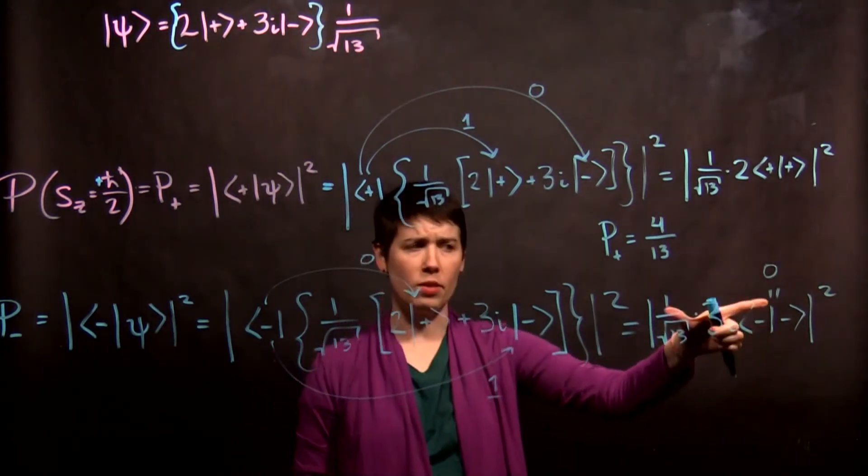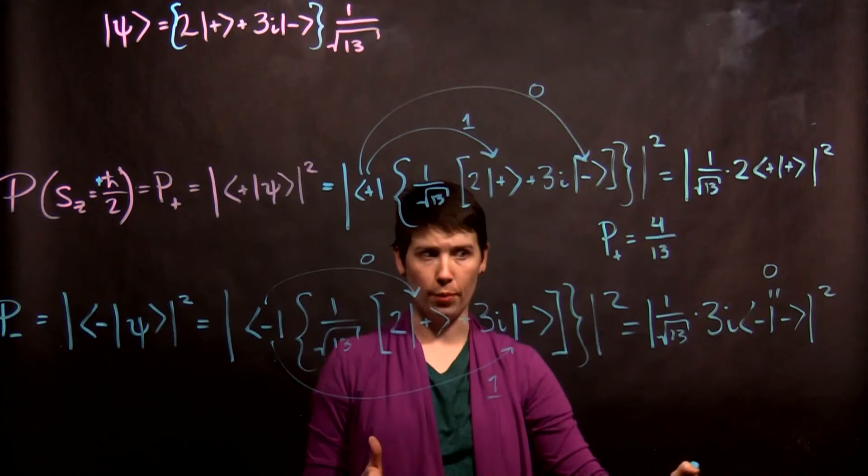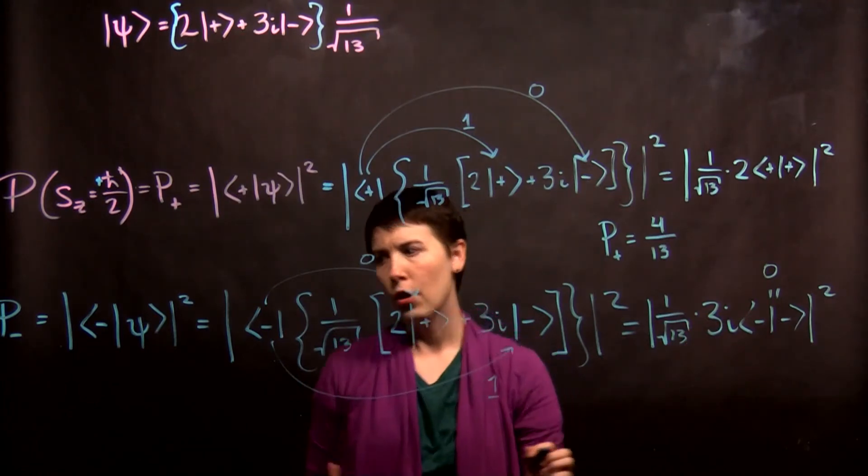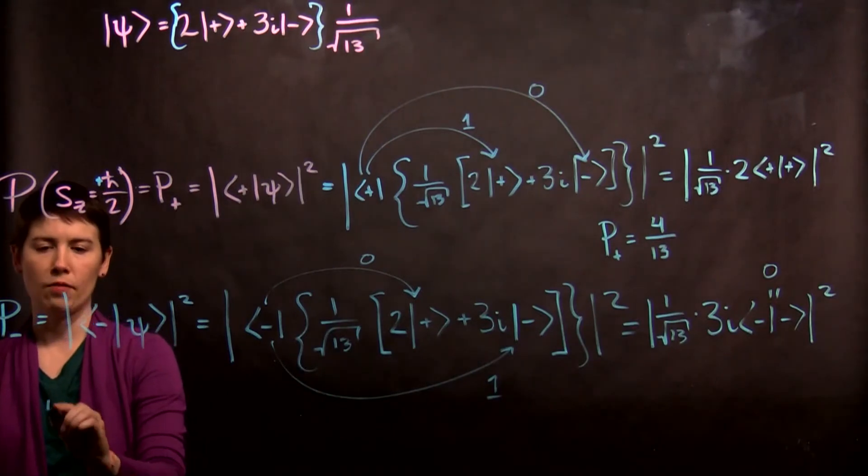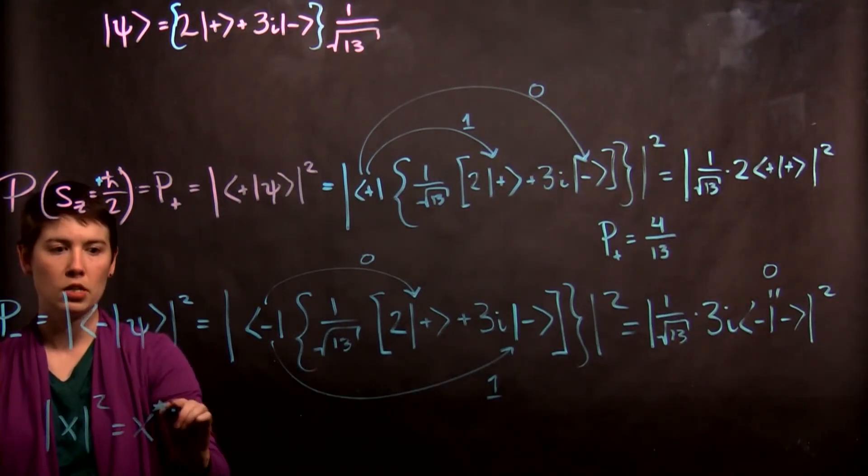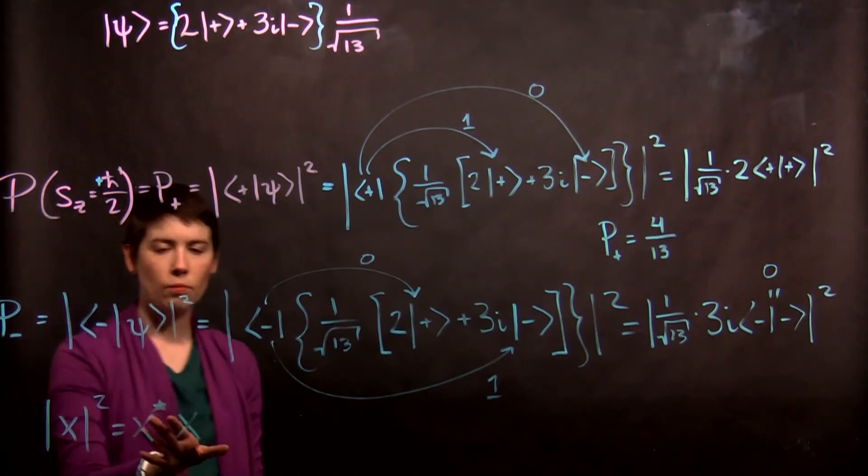But notice now that we have the magnitude of a complex number. So when we think about that magnitude squared, remember that if you in general have magnitude of x squared, that we can write that as x star times x.